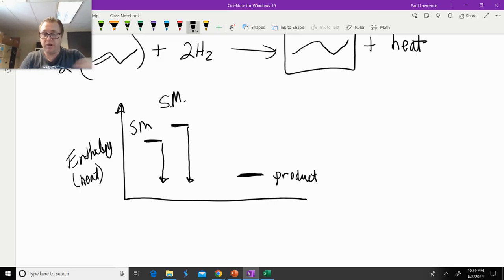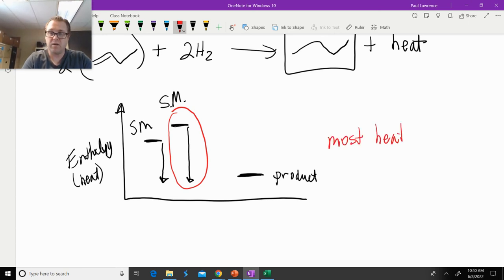So what we're going to do is the, how we're going to interpret this is the molecule that gives off the most heat. So this molecule right here is going to give off the most heat because there's a larger energy gap. So the molecule that gives off the most heat means it is the least stable.